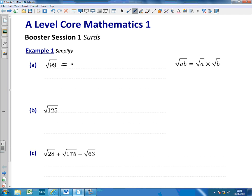So we can now rewrite the number 99 as 9 times 11. And then what the rule here is saying is we can individually square root 9 and individually square root 11. So we can write this as 3√11.